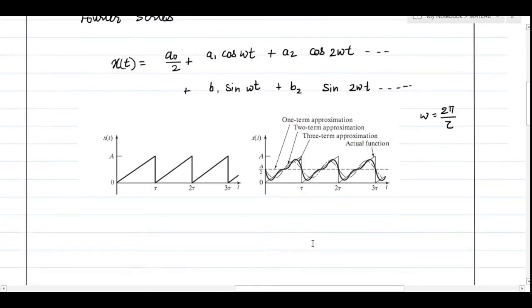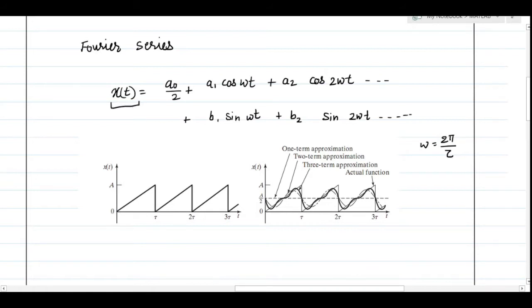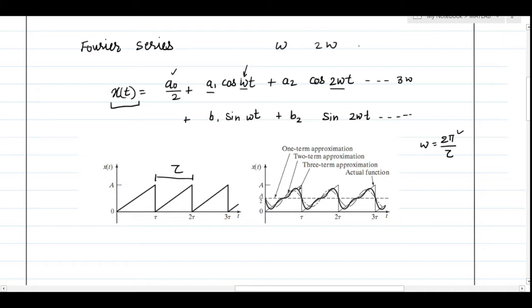The mathematical formula of the Fourier series: x(t), which is a periodic signal, can be represented by a combination of infinite sine and cosine terms. The first term is a constant. The remaining terms have cosine or sine components where ω is the fundamental frequency, written as 2π/τ, where τ is the time period. Coefficients a1, a2, b1, b2 correspond to frequencies ω, 2ω, 3ω, and so on. We call ω the fundamental tone and 2ω, 3ω, etc., its harmonics.